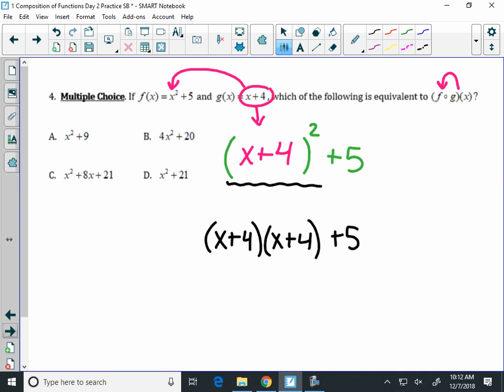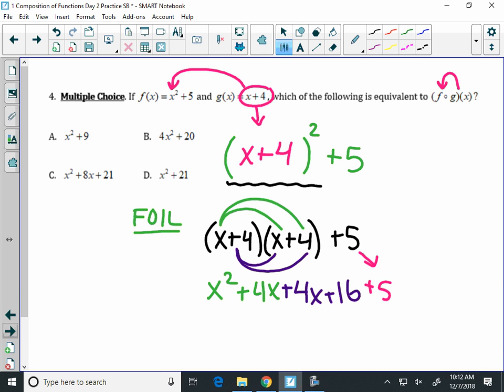or call FOIL if that helps you. So you do x times x is x squared. x times 4 is plus 4x. You have 4 times x here is plus 4x. And 4 times 4 is 16. And then you have that plus 5 on the end that comes down from up above.